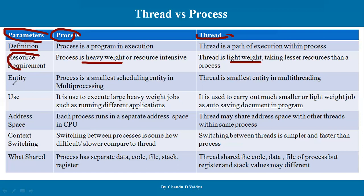When we talk about the process, the process is the smallest scheduling entity in multiprocessing. The smallest entity in multiprocessing is a process. But if we talk about multi-threading, in multi-threading we have the smallest entity which is the thread. In multi-threading there will be threads scheduled to run, and in multiprocessing there will be multiple processes.